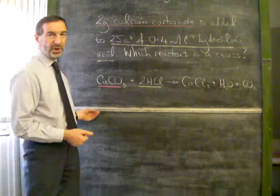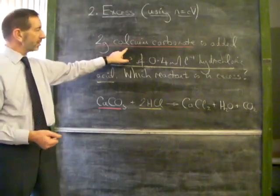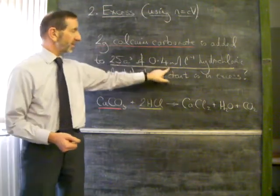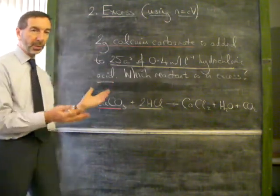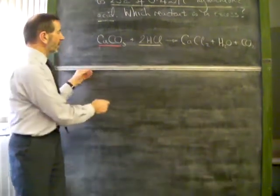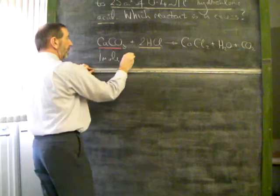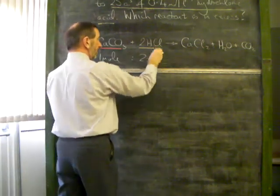To tackle this question, once again, we have to work out how many moles of calcium carbonate is 2 grams. How many moles of acid do we have? Only by turning them both into moles can we compare the two. According to our balanced equation, one mole of calcium carbonate reacts with two moles of hydrochloric acid.